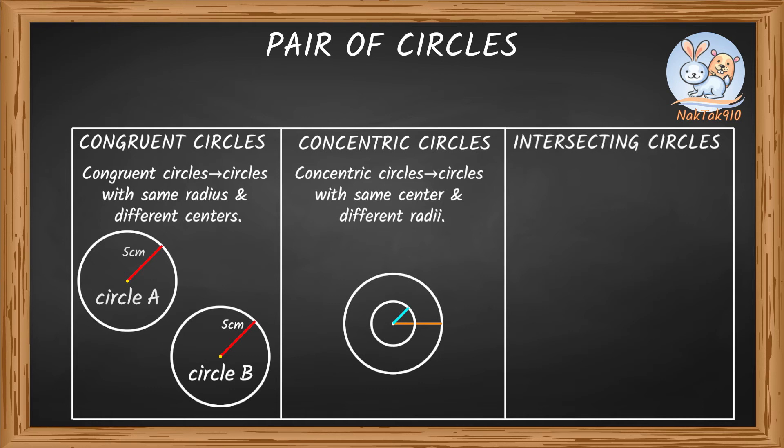Intersecting Circles. Okay, say I draw a circle, and then I draw another circle overlapping the first one. They don't have to share the same center, but they can have different radius.